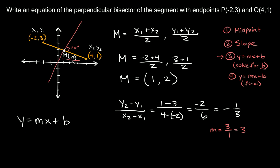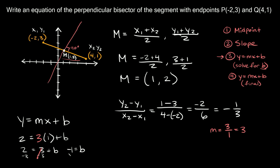We know that y = 2, the slope m = 3, and x = 1. Plugging in: 2 = 3(1) + b, which gives 2 = 3 + b. Subtracting 3 from both sides: 2 minus 3 equals negative 1, so b = negative 1.